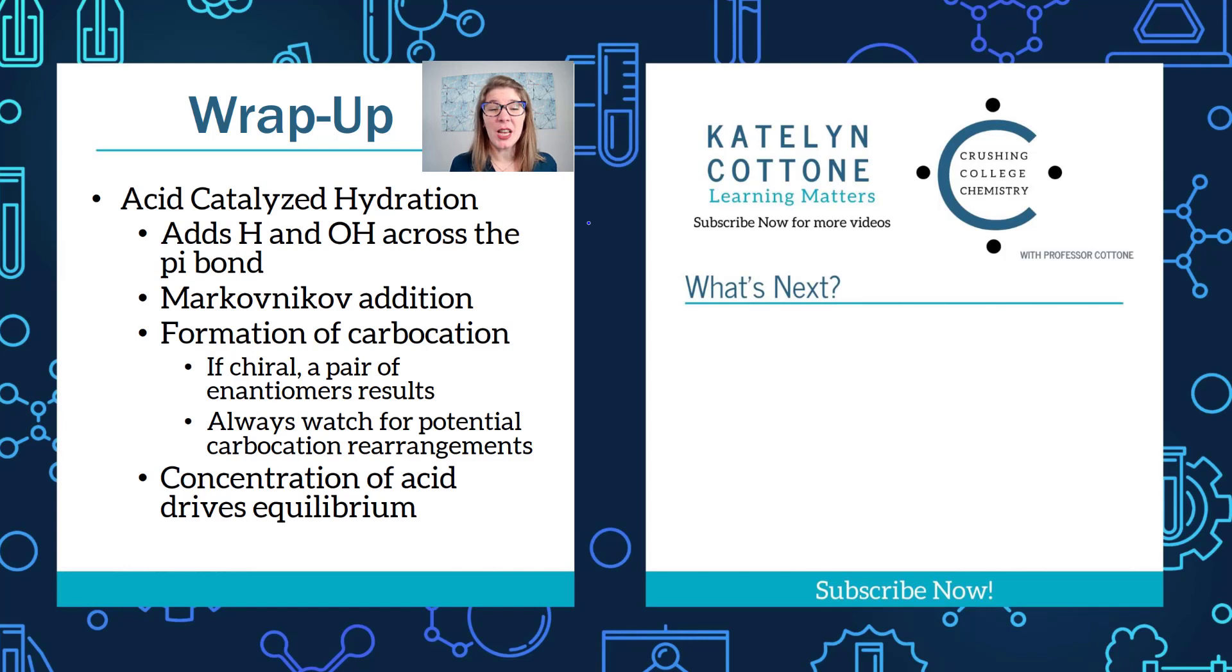Let's wrap up. In this video, we looked at acid-catalyzed hydration, where we considered how we can add H and OH across a pi bond. This was a Markovnikov reaction, meaning that the OH went to the more substituted side. Because you formed a carbocation, you should be looking out for carbocation rearrangements. And because you formed a carbocation, if your final product created a chiral center, then you should have a pair of enantiomers. And if you start looking at this reaction and elimination reactions and get confused because they both utilize acid, remember that it's concentration dependent. So the concentration of the acid drives which reaction is going to happen. Thanks so much for your attention. This is Katelyn Cottone, signing out.